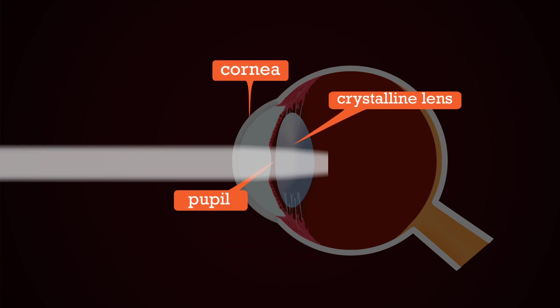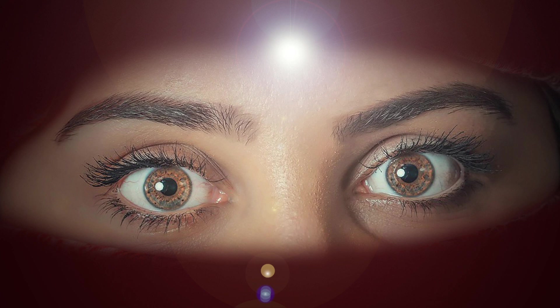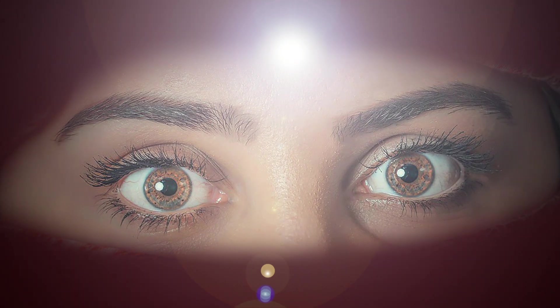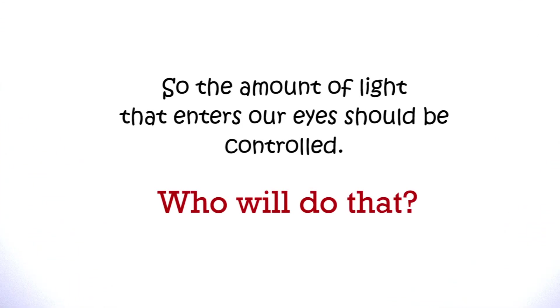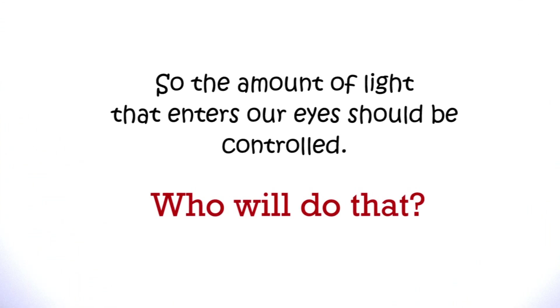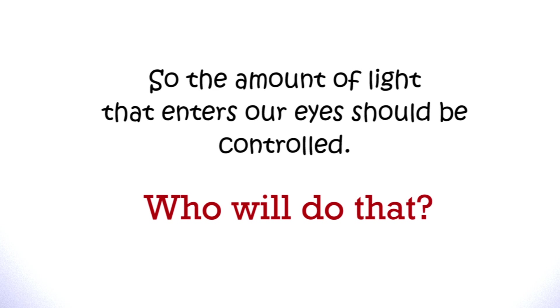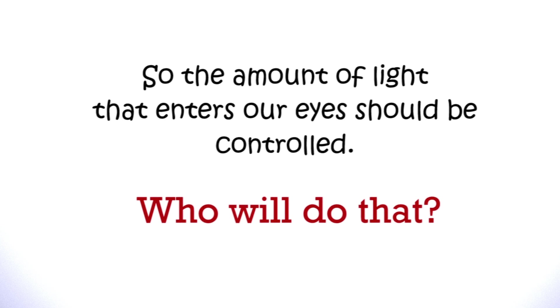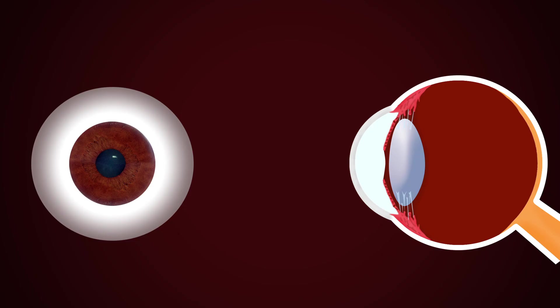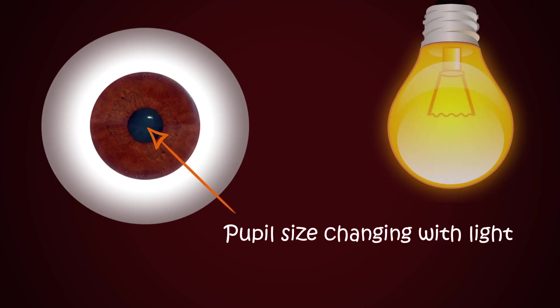The light then falls on the crystalline lens through the pupil. If very bright light enters our eyes, the inner parts may get damaged, so the amount of light entering should be controlled. The iris does that - it is a dark muscular diaphragm that controls the size of the pupil. The pupil regulates the amount of light entering the eye.